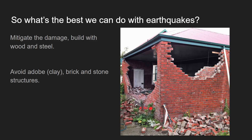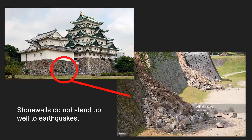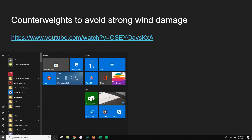Since we can't predict earthquakes, we have to respond differently — we have to engineer a way around it so we don't get destroyed every time one occurs. One way is to stop building with bricks, stone, clay, and adobe. Modern structures are built with wood or steel for larger structures, because stone walls do not stand up well to earthquakes. Here's a picture of a castle wall in Japan that crumbled because of an earthquake — they have tons of earthquakes there.